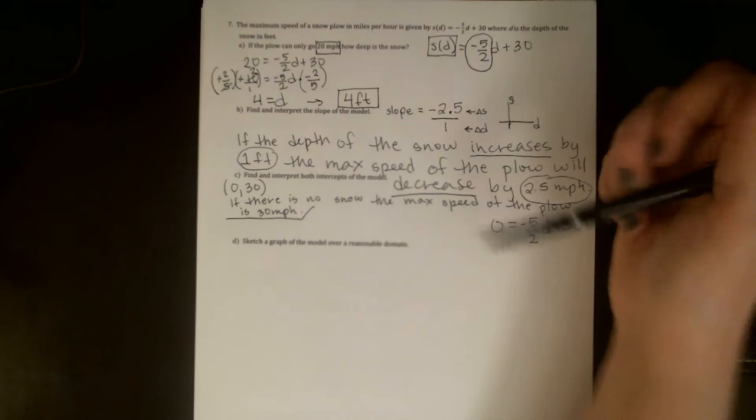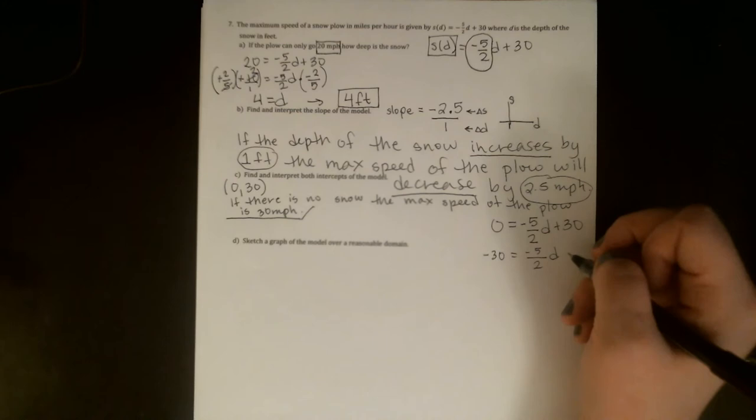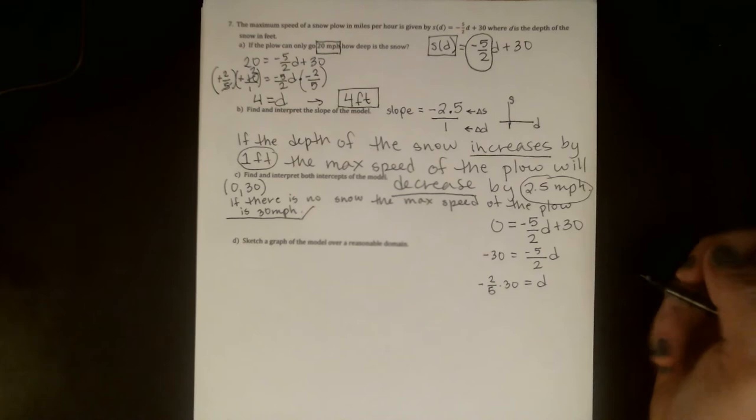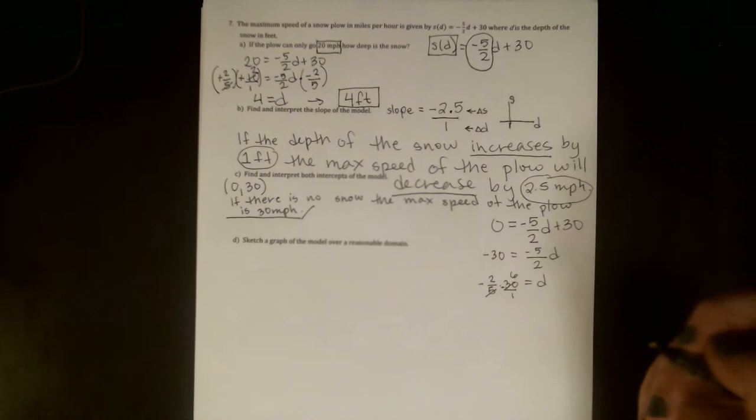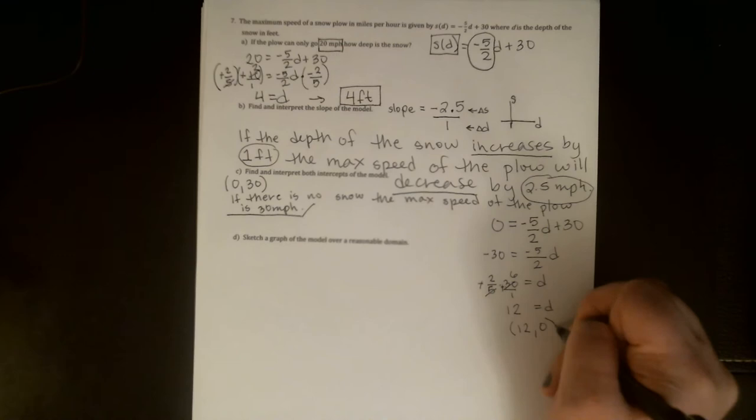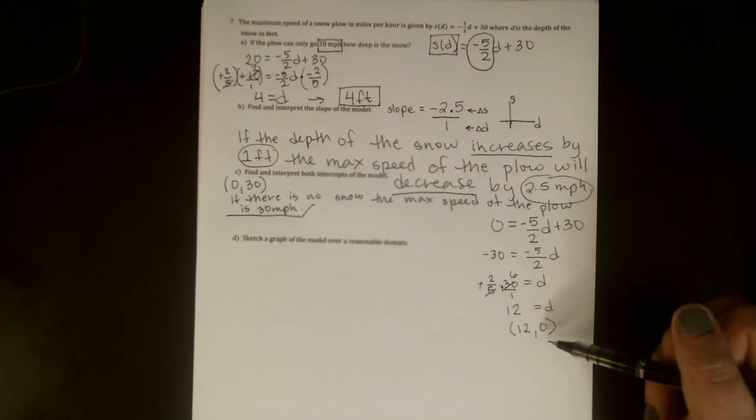I am going to go ahead and subtract 30. Reverse order of operations. And then once again, we want to get rid of a negative five-halves. It's attached by multiplication, so we'll divide, which means we'll get negative two-fifths times 30. We can cancel a five out, and that will leave us with two times six. The minus signs will also cancel, so we're getting positive 12.